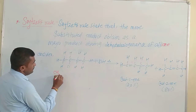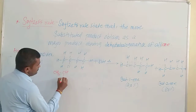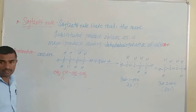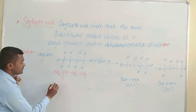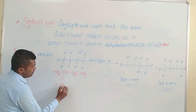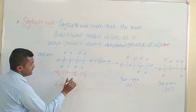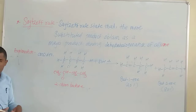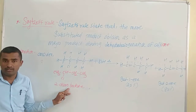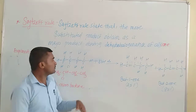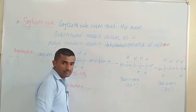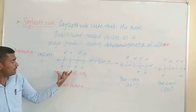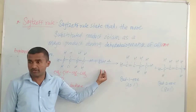The structure is: CH3, then CHCl, then CH2, and then CH3. The product is 2-chlorobutane. So, 2-chlorobutane undergoes reaction with potassium hydroxide (KOH).